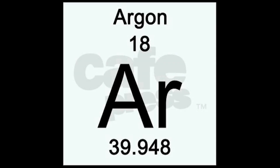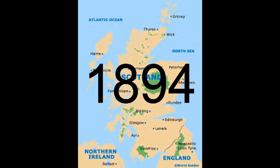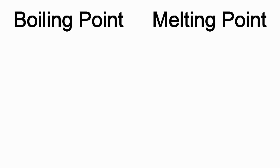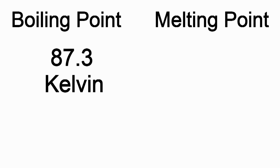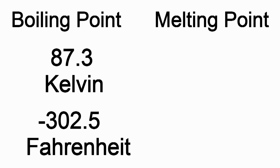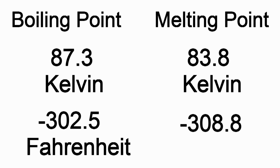Behind every great element is a great person who discovered it. Argon was discovered by Sir William Ramsay in Scotland in 1894 — who knew? That's why there's Google. Each element has both a boiling point and a melting point. Argon's boiling point is 87.3 Kelvin, which is about negative 302.5 Fahrenheit. Argon's melting point is 83.8 Kelvin, which is about negative 308.8 Fahrenheit.